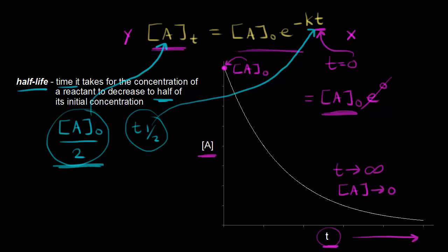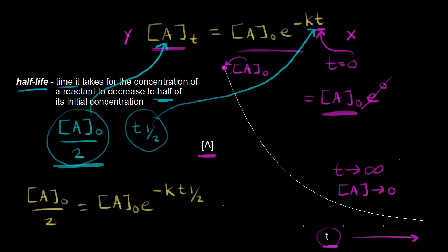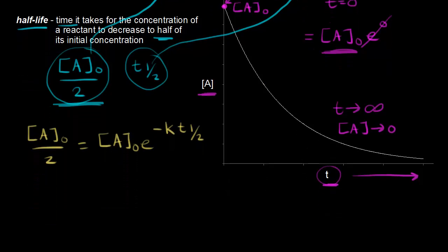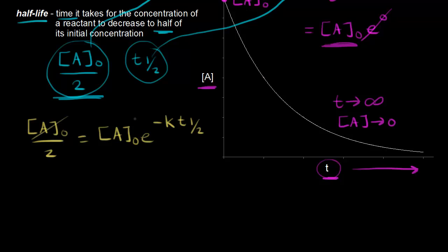Let's plug those in and solve for the half-life. On the left side we would have our initial concentration divided by two, and this would be equal to the initial concentration of A times e to the negative k times t one-half. Now we can immediately cancel out our initial concentration of A, so we have one-half is equal to e to the negative k·t one-half.